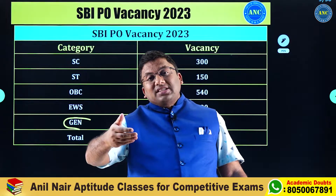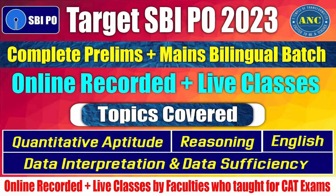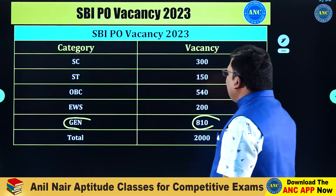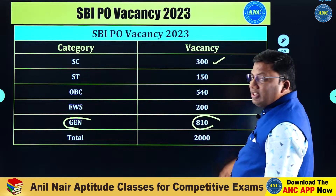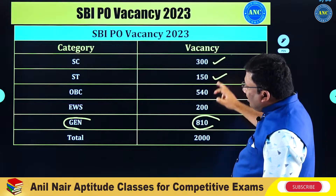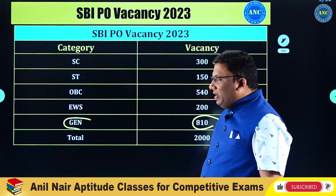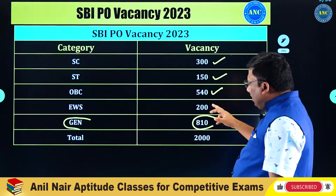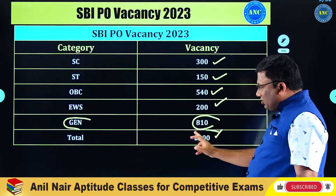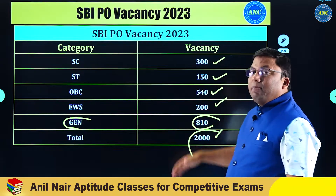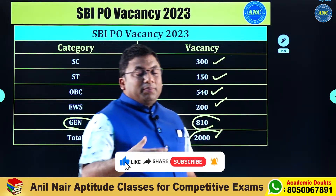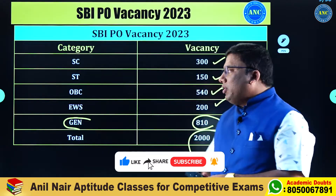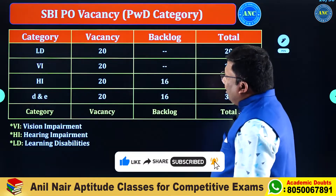You can see what the percentage of selection is and what the percentage of rejection is. If you are from a reservation category — SC, ST — 300 seats are there for SC, 150 seats are there for ST, and there are seats for OBC and Economically Weaker Section as well. These are the number of vacancies — 2000 vacancies depending upon which category you come from, provided by the State Bank of India.